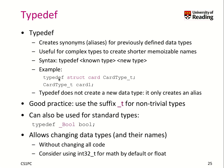Here I have said typedef struct card. So whatever was previously called struct card should be named as card_type_t. And now I can use card_type_t as a data type instead of struct card, which includes some white space and is sometimes harder to read.